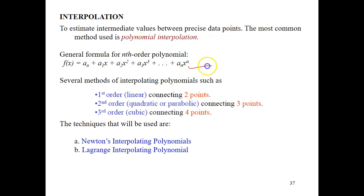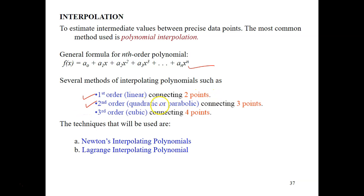This is the form of a polynomial, and this is the nth order. So we have f(x) equals a₀ plus a₁x plus a₂x² and so on. In this chapter we're going to look into several methods: the first order, or linear interpolation, which connects two points; second order, or quadratic interpolation, which connects three points; and the third order, or cubic interpolation, that connects four points.